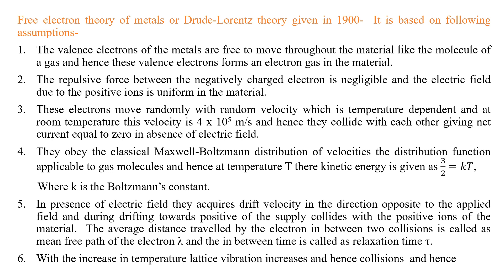Now we look at the free electron theory, the second point of this chapter. Some conductivity expressions are based on this theory. This theory was given by Drude and Lorentz in the year 1900, also called the Drude-Lorentz theory, and it is based on the following assumptions. Drude and Lorentz related this to the molecular theory of gases and Maxwell-Boltzmann statistics. According to this theory, in metals or conductors, the valence electrons are almost free in the material for any temperature T > 0 K.